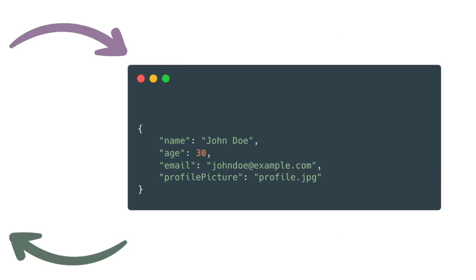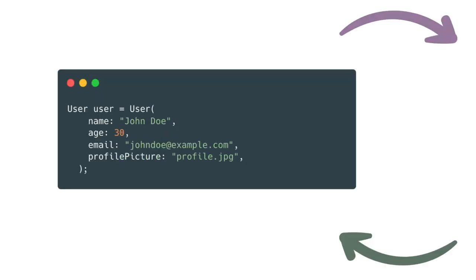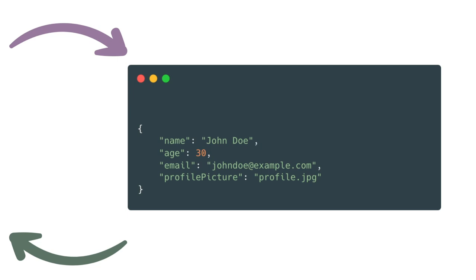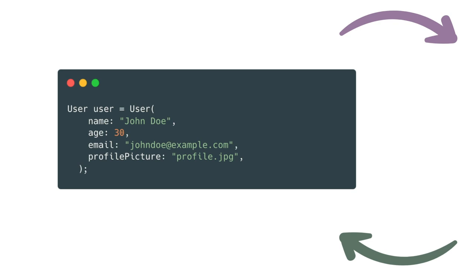Data serialization allows us to convert this complex object — the user profile — into a format that can be easily handled for storage, transmission, and other purposes. One well-known format is a text-based format like JSON. You convert the complex object into a text-based format; we still have the attributes name, age, email, and profile picture. JSON, or JavaScript Object Notation, is human-readable and widely supported. Data deserialization is just the reverse process — it takes the serialized data, such as JSON, and reconstructs it back to the original data structure or object.